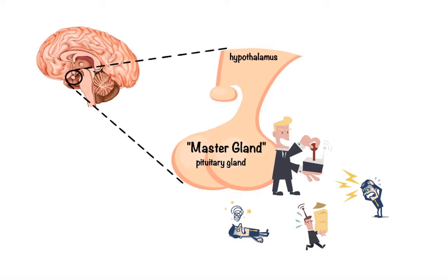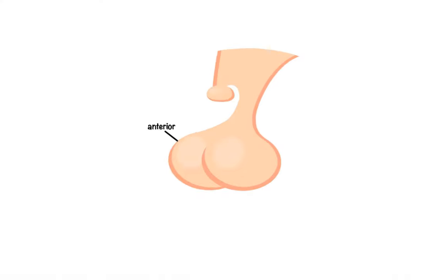The master pituitary gland consists of an anterior lobe, which contains specialized cells that produce and secrete hormones in response to hormones released from the hypothalamus.